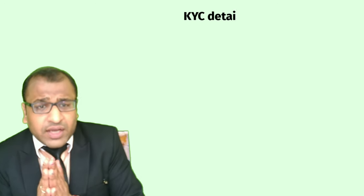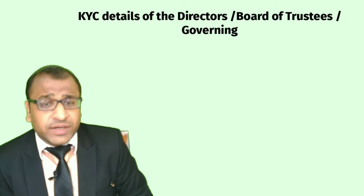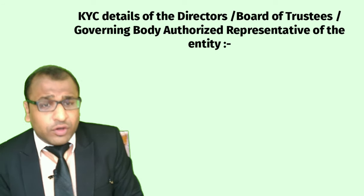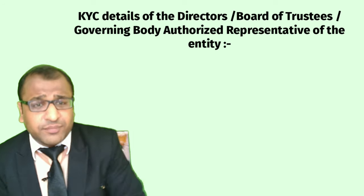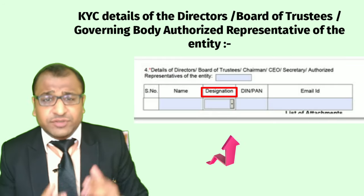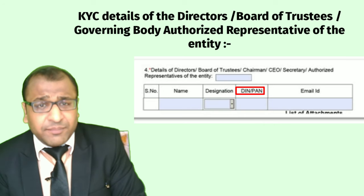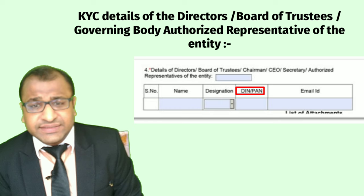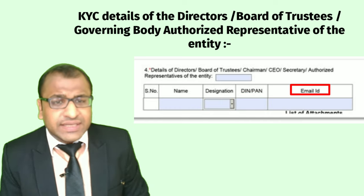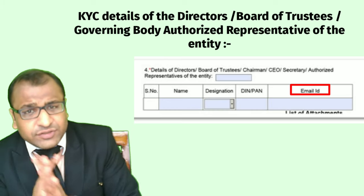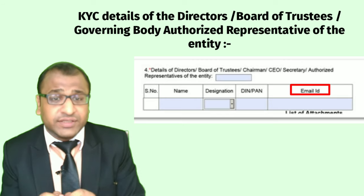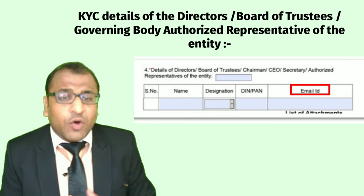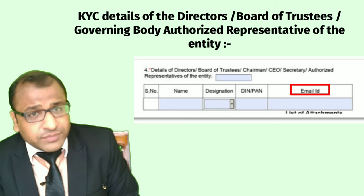Step 7: Point 4 of CSR Form 1 requires KYC details of the directors, board of trustees, governing body, or authorized representative of the entity, filled in the given format — name, designation (selected from a drop-down list), DIN (director identification number) for Section 8 company directors or PAN for other entities, and the email ID. Note that the DIN, applicable to directors of Section 8 companies, must be valid and associated with the entity. Similarly, the email ID should be existing and active, as online communication is now the norm.